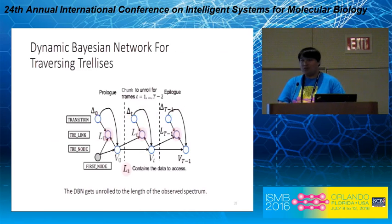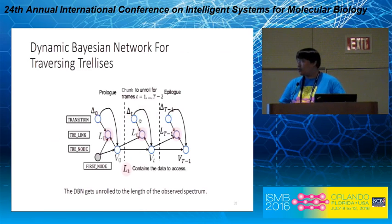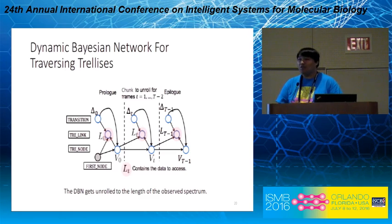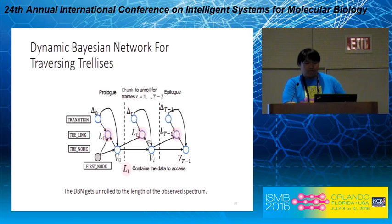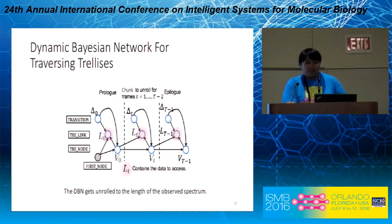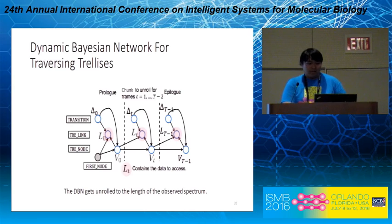Here we show the actual DBN model for traversing the trellis, where the middle part — which we call a chunk — gets replicated, so that the actual length of the model will be equivalent to the length of the input data, which in our case is the length of the observed spectrum. The DBN model for traversing the trellis consists of three variables: the transition or delta variable, the trellis link variable, and the trellis node variable. The delta variable can be thought of as an input or control variable; the trellis link variable is the output variable containing the data you want to access from the trellis; and the trellis node variable indicates our current position in the trellis.